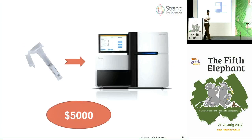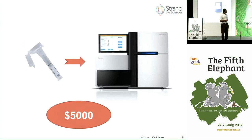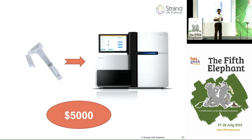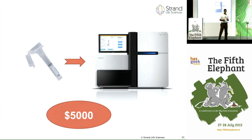Now, the computational part: what comes out of this machine, what does it have to do with big data, and what sorts of algorithms are needed to take what comes out of the machine and output the places where you are different? You gave your saliva, and here are the one-in-a-thousand places where you differ, and here is how you differ.